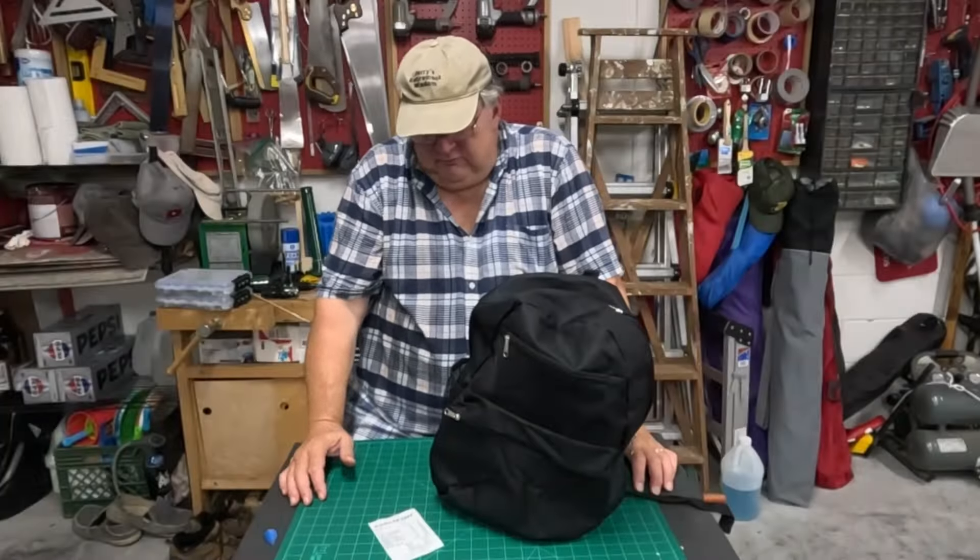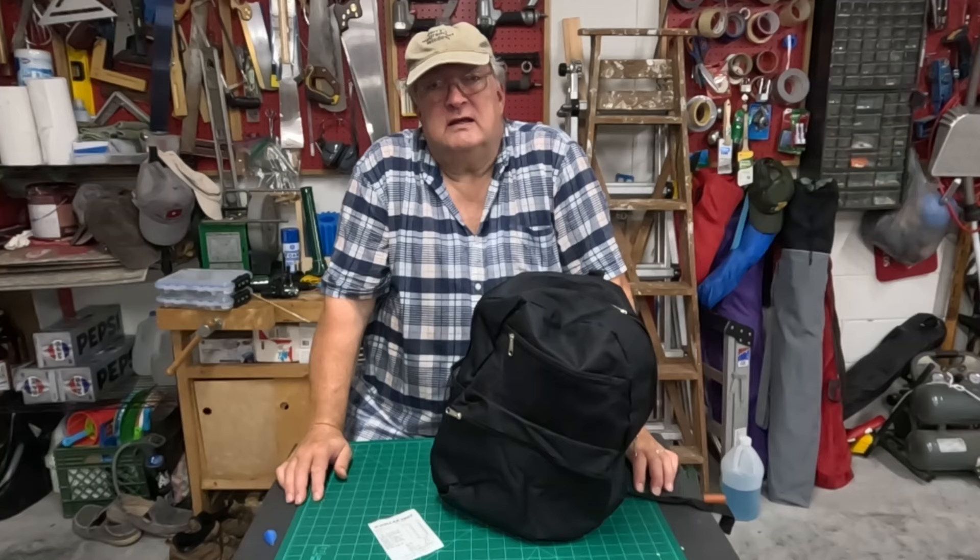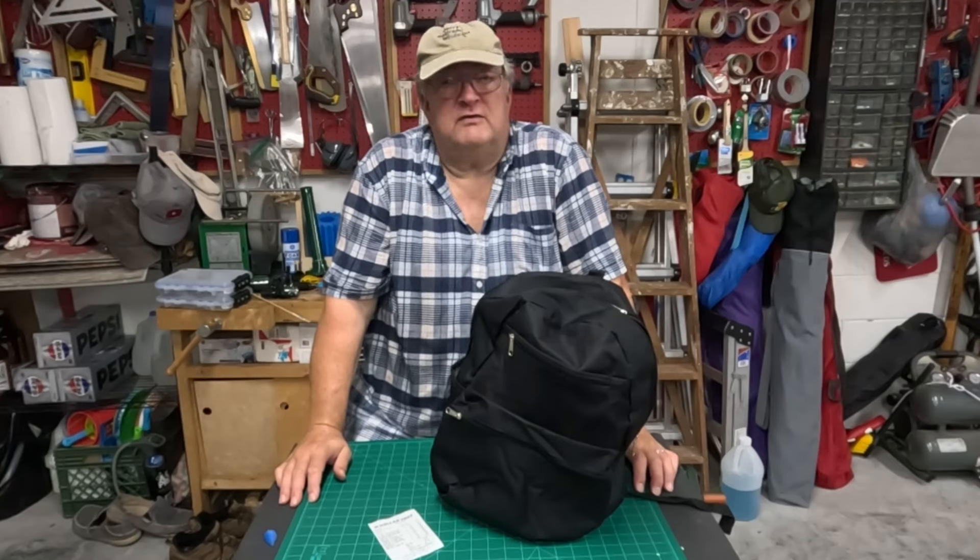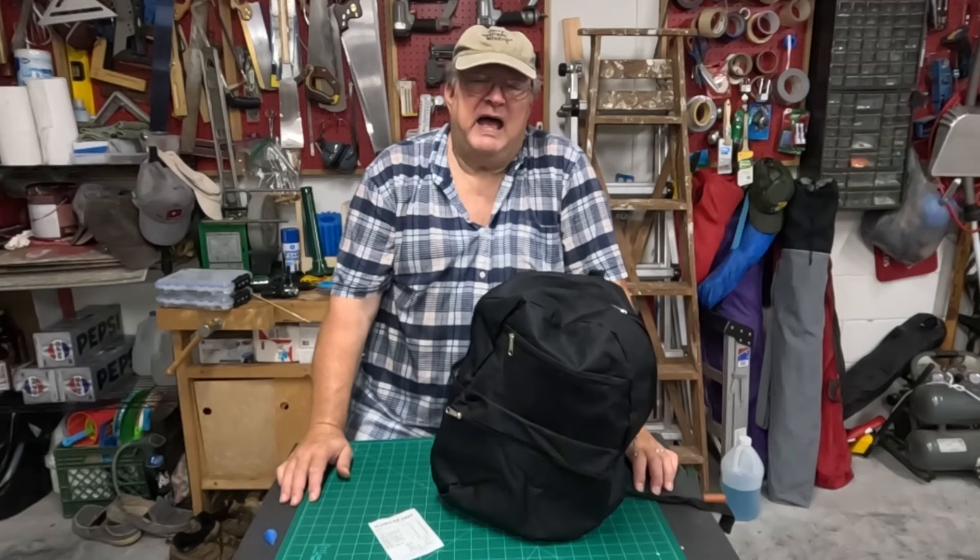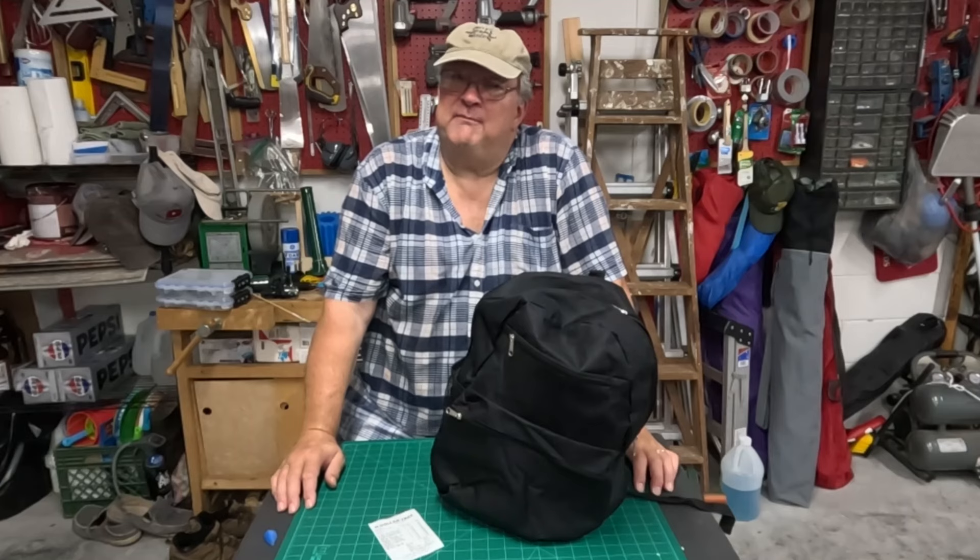So there you have it. I'm checking my Dollar Tree receipt. I spent five dollars on the backpack, and the rest I spent on accessories and storage solutions to make this a back-to-school backpack tackle box. And for the total, 22 dollars and some change. Not bad.